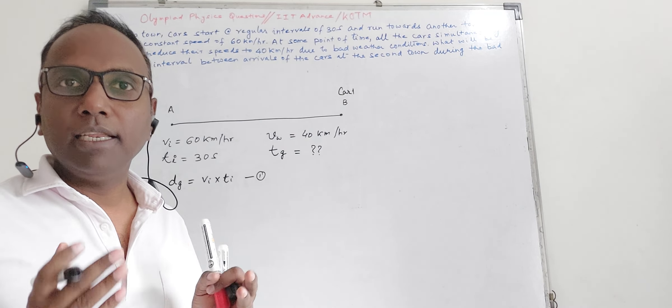So when car 1 reaches at B, where will car 2 be? It should be DG distance behind. But at the same time, in the question it is given that the speed of car 2 and all the cars has reduced to 40 kilometers per hour, that is VW. So car 2 with VW speed covering this DG distance, how much time will it take? That is DG. So it has become very simple now. VW into TG is equal to DG, that is VI into TI, so TG will be VI by VW into TI.